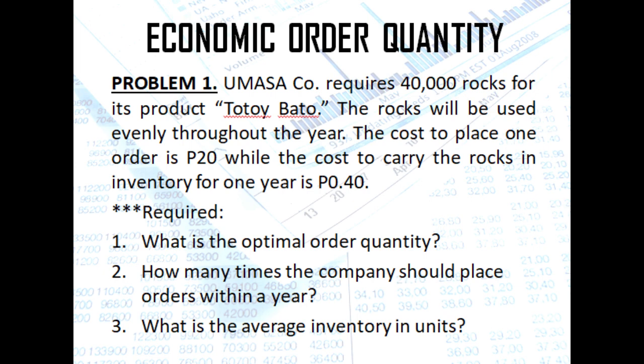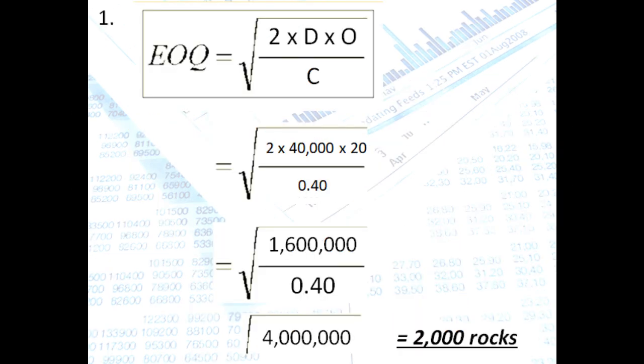Required. What is the optimal order quantity? Number two, how many times the company should place orders within a year? And number three, what is the average inventory in units?